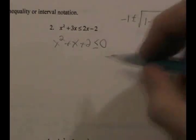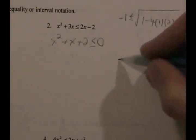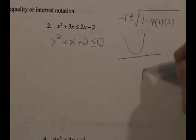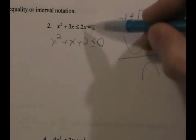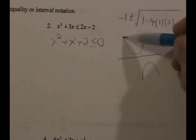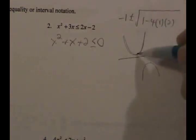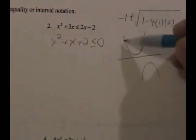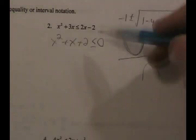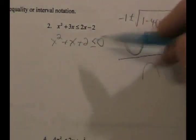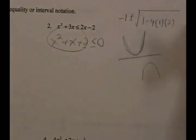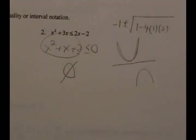Since it doesn't have any zeros, if I were to graph it, it would be either totally above or totally below the x-axis. Since it opens up, it has to be completely above. So no matter what I plug in, this is always going to be some positive number — it's never less than or equal to zero. So I would write the empty set, or no solution.